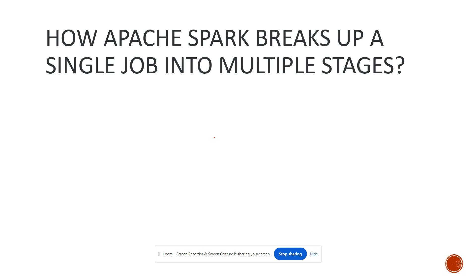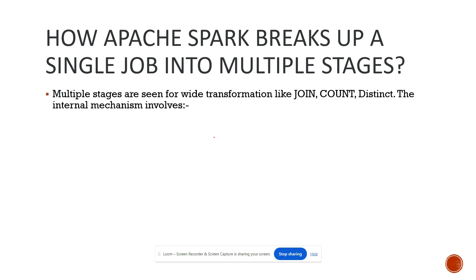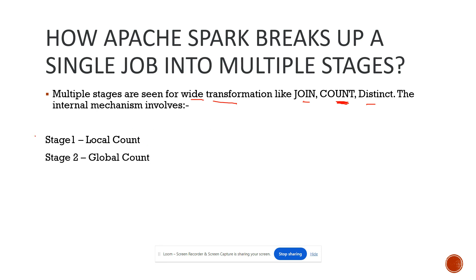Coming to how Apache Spark breaks up a single job into multiple stages: multiple stages come with wide transformations. If you have a wide transformation then there are multiple stages; if you have a narrow transformation like select or filter then there would not be multiple stages. If we have operations like join, count, or distinct then a single job would have multiple stages. Internally in Apache Spark, when using a count operation, two stages are created — one is your local count and the other is your global count.